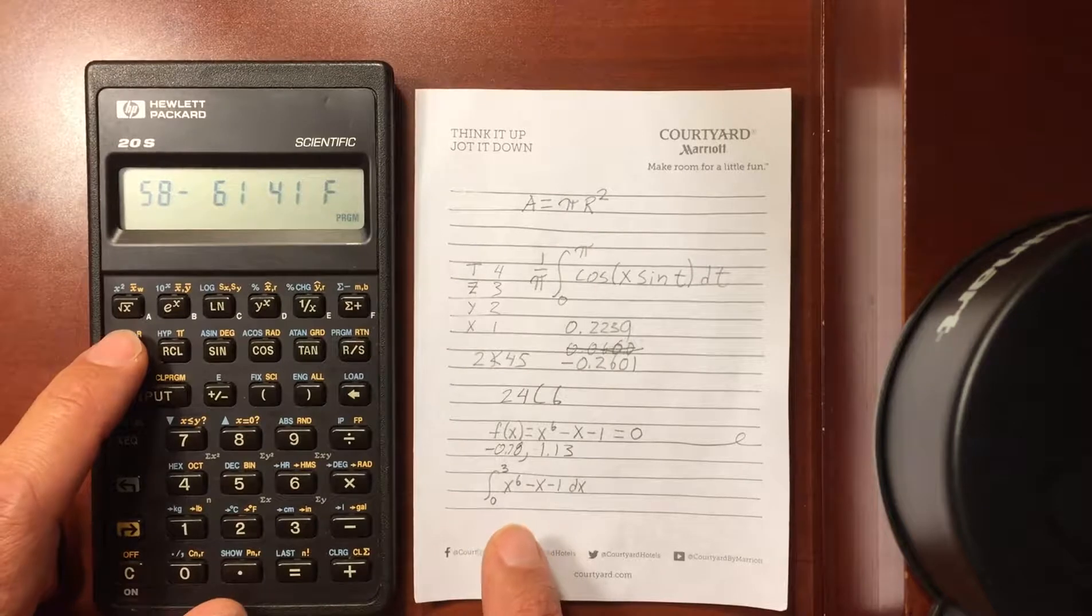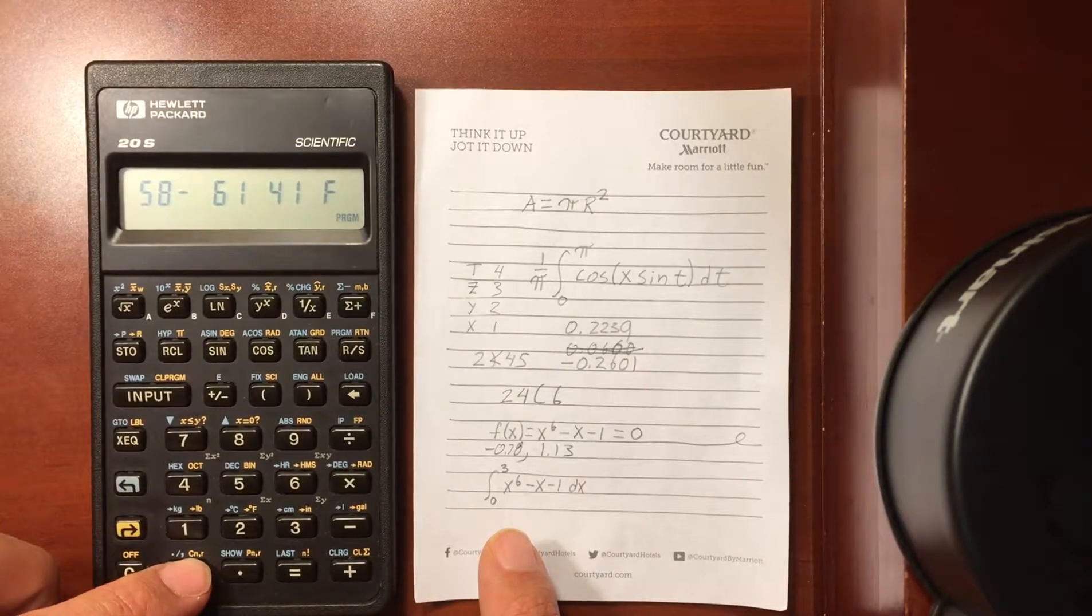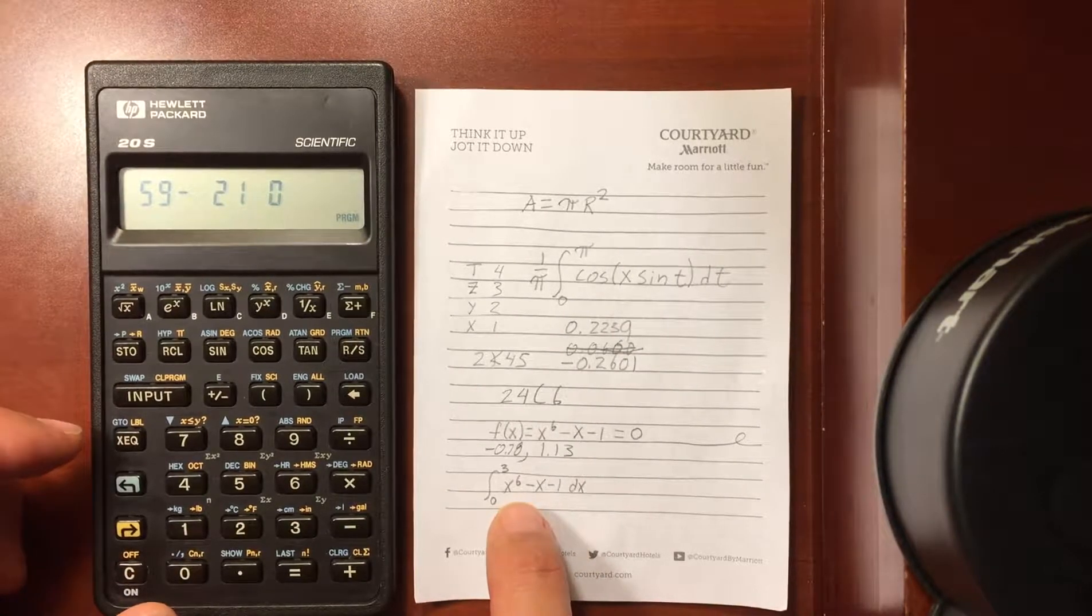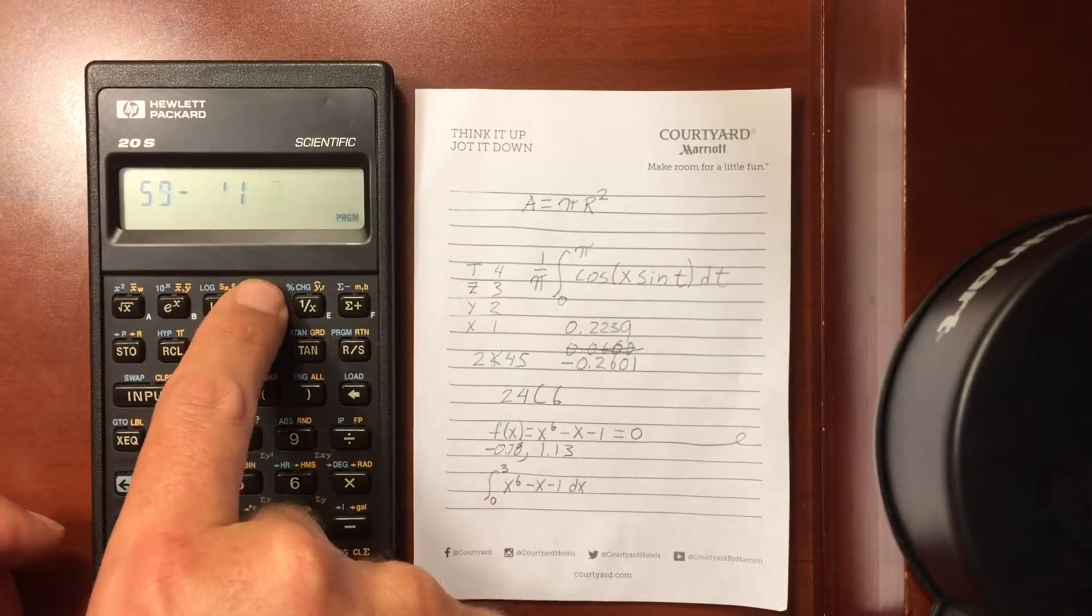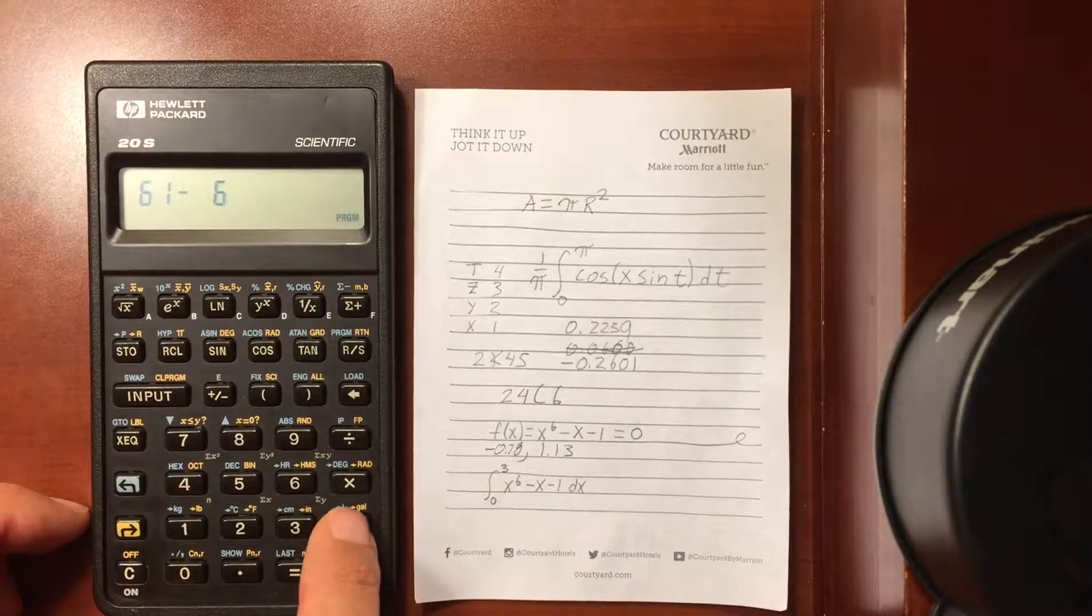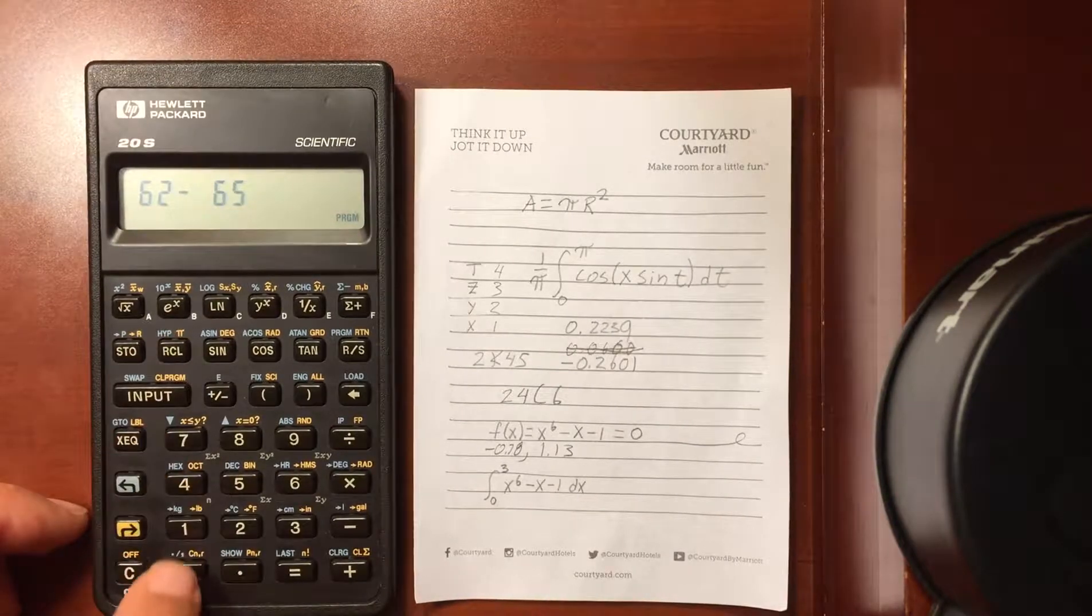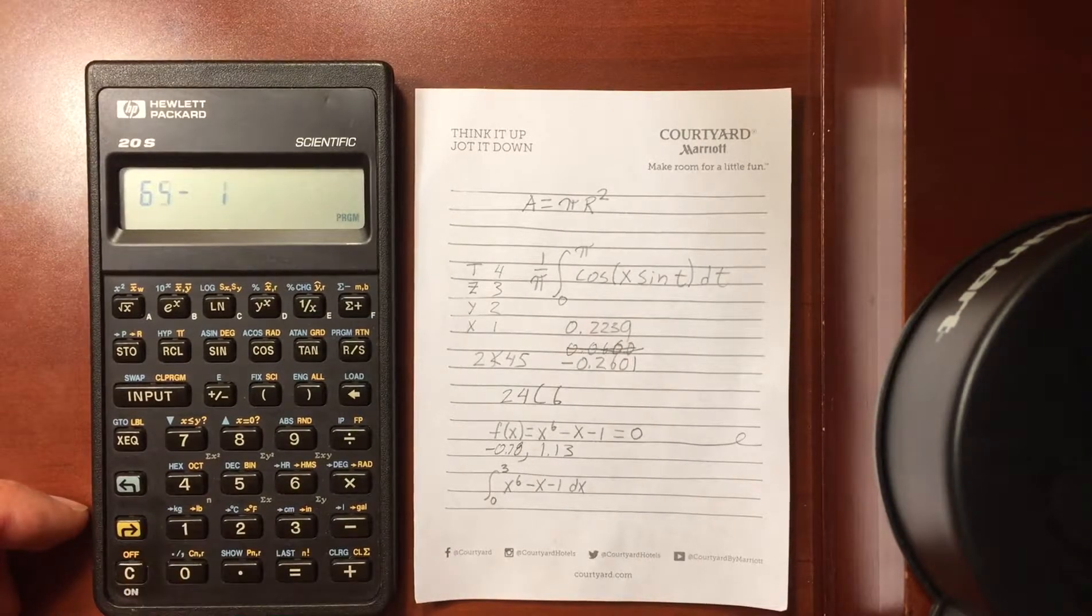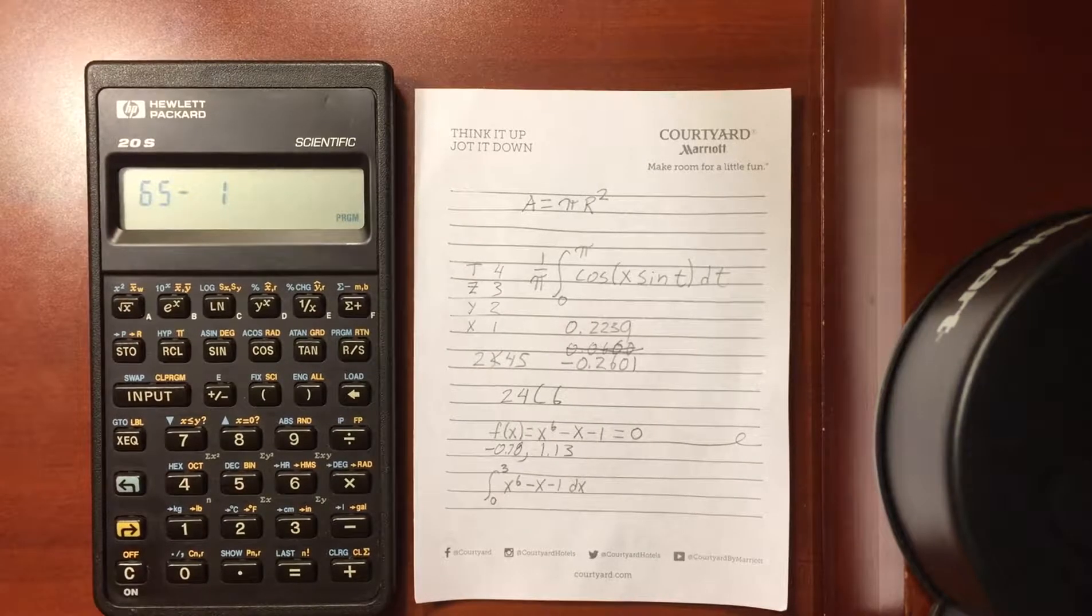So we're going to store X first. I'm going to store it in zero. And then we're going to take that number that we've got in the X register as this program cycles through. And we're going to take the sixth power. We are going to subtract that number we stored before. So recall zero. It will be recalled from the zero register with that number we'd stored. Subtract one.